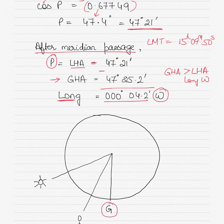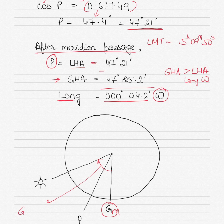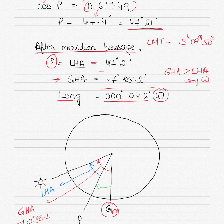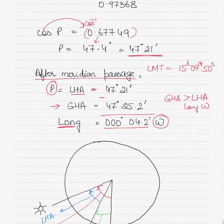Conceptually: the celestial Greenwich meridian is the reference. GHA is the angle measured westward from Greenwich to the sun, equal to 47 degrees 25.2 minutes. LHA is measured westward from the observer to the sun, equal to 47 degrees 21 minutes. Since the observer is west of Greenwich, longitude is west and equals the difference between GHA and LHA — confirming the numerical result.